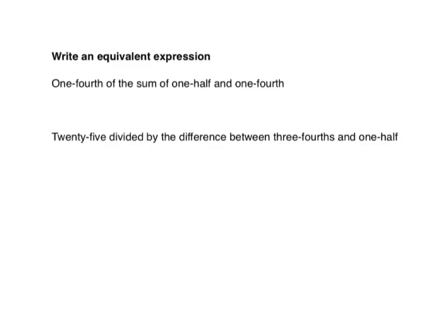For these problems, we simply have to convert words into numerical expressions. We have one-fourth of the sum of one-half plus one-and-one-fourth. We're going to put brackets around that sum. When we see the word 'sum,' we know we need to add. I could put the one-fourth in the front, or I could find the sum first — we can do that because of the commutative property.